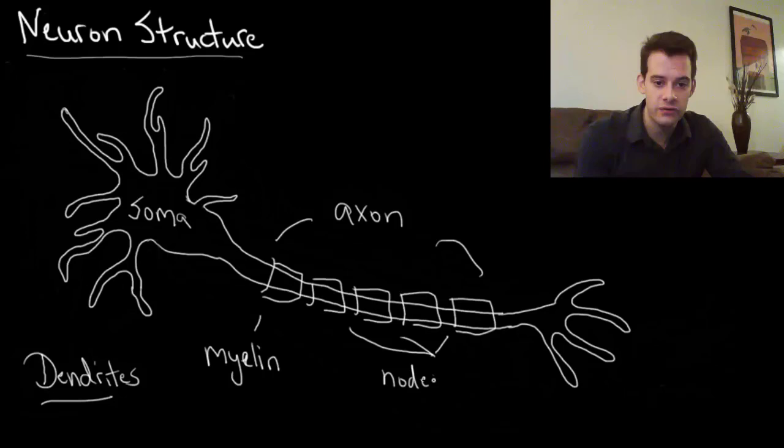And these gaps are called the nodes of Ranvier. These are named after Louis-Antoine Ranvier, a French anatomist who discovered them.